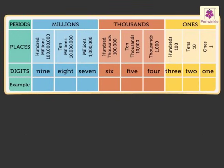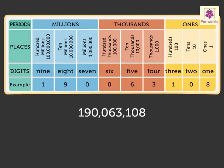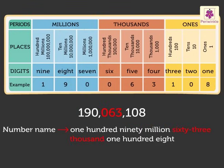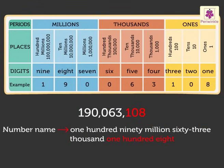Let us try one more example. We write this number as 190,063,108. We read this number as one hundred ninety million sixty-three thousand one hundred eight. Did you notice here we did not read the place value of the zeroes, but we did write them to show the place value.